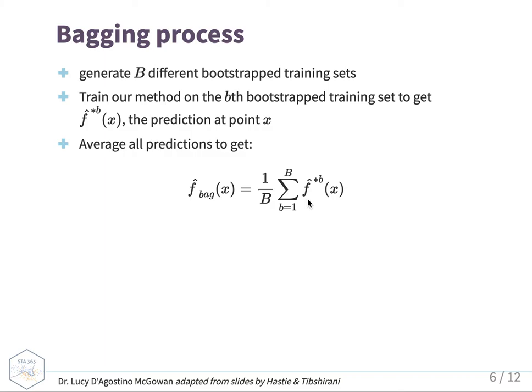Why do we do that? As shown previously, when you take the average of a bunch of different variables, the variance is reduced, which is preferable. Instead of looking at a single F-hat with variance sigma squared, we look at the average across a whole bunch of F-hats, and that gives us sigma squared over B, because B is the number of training sets we have. So this is bagging.